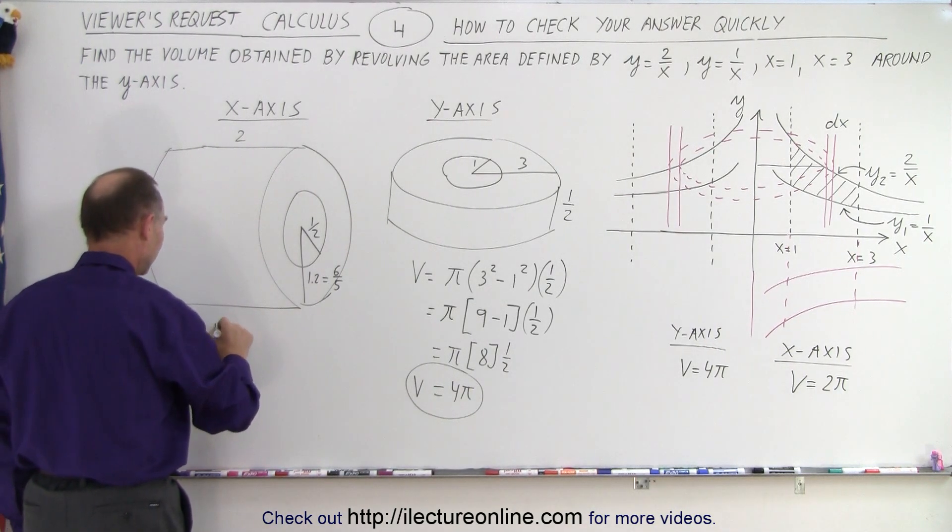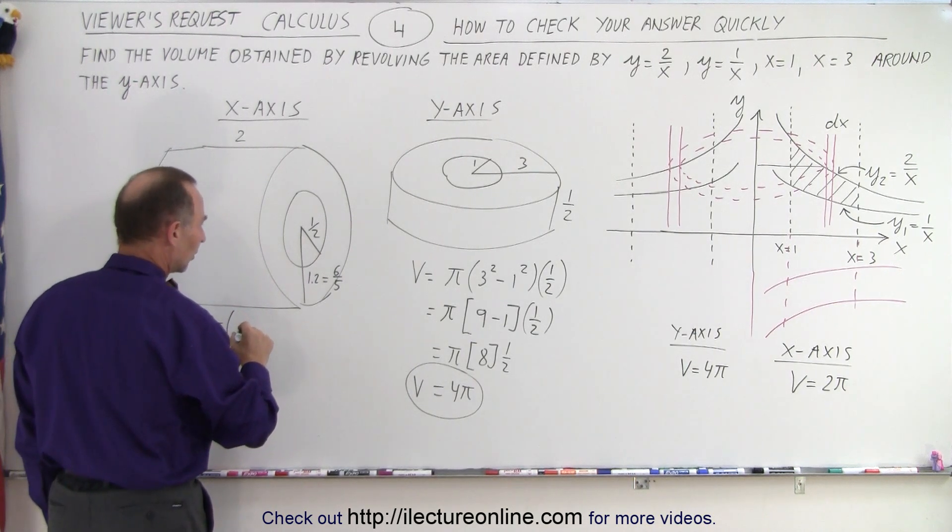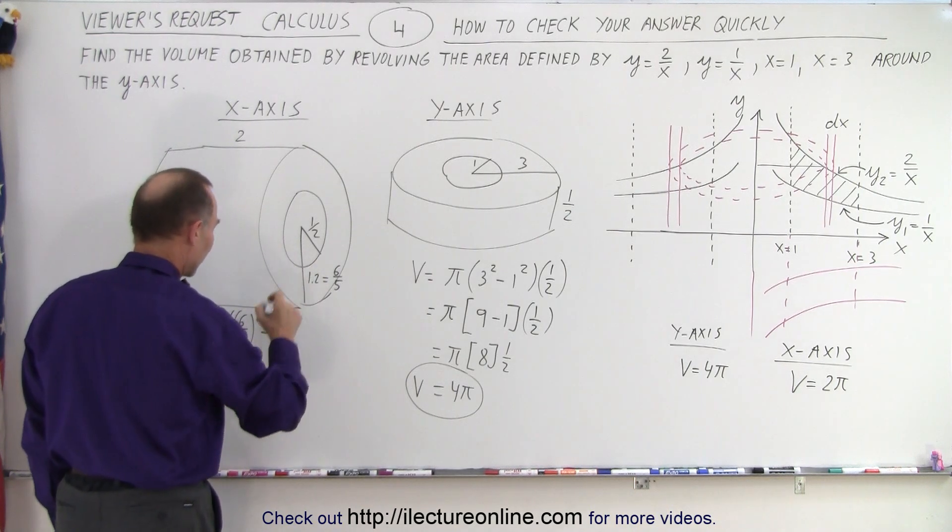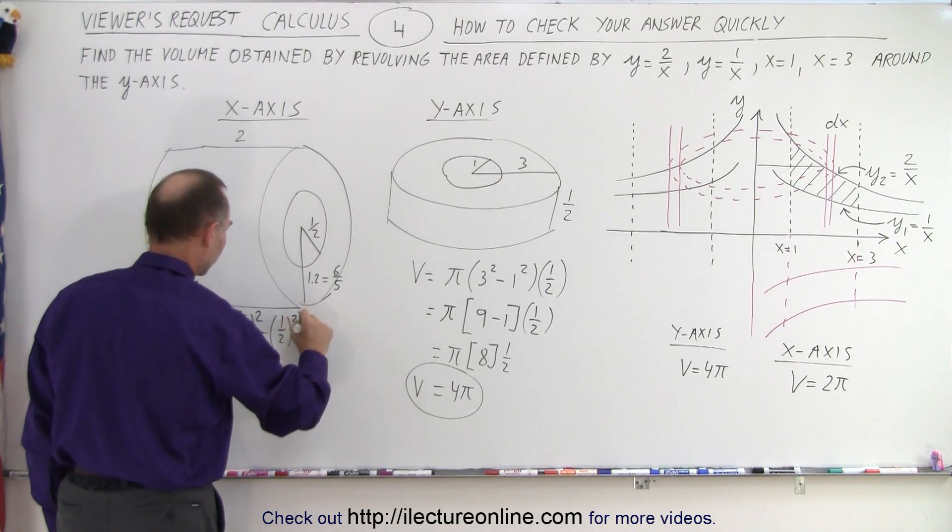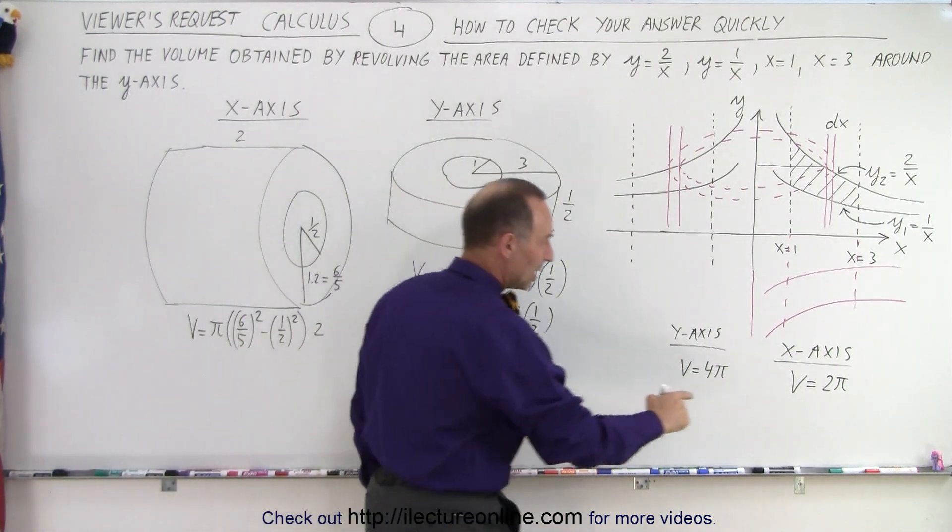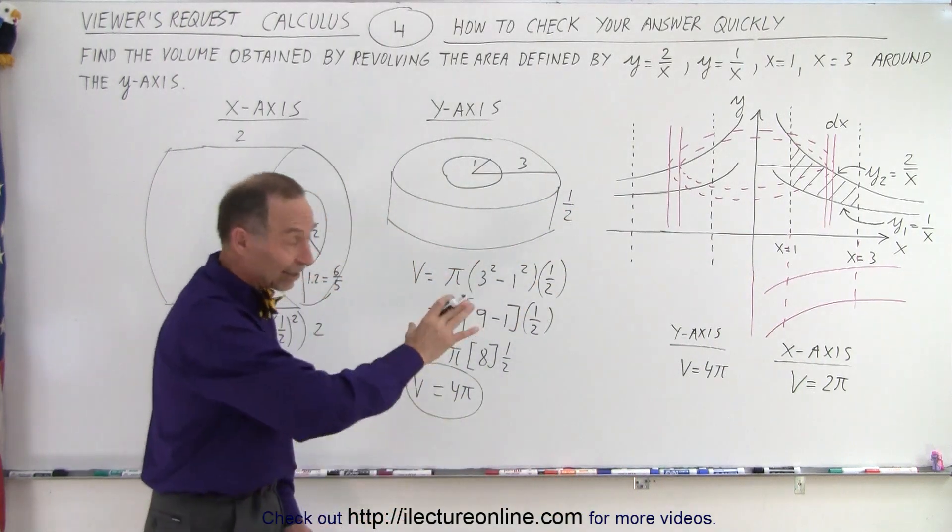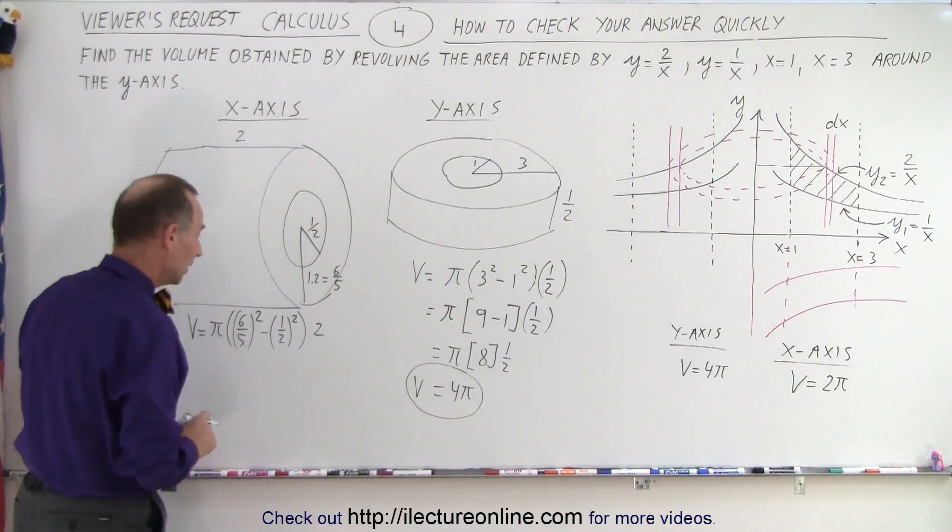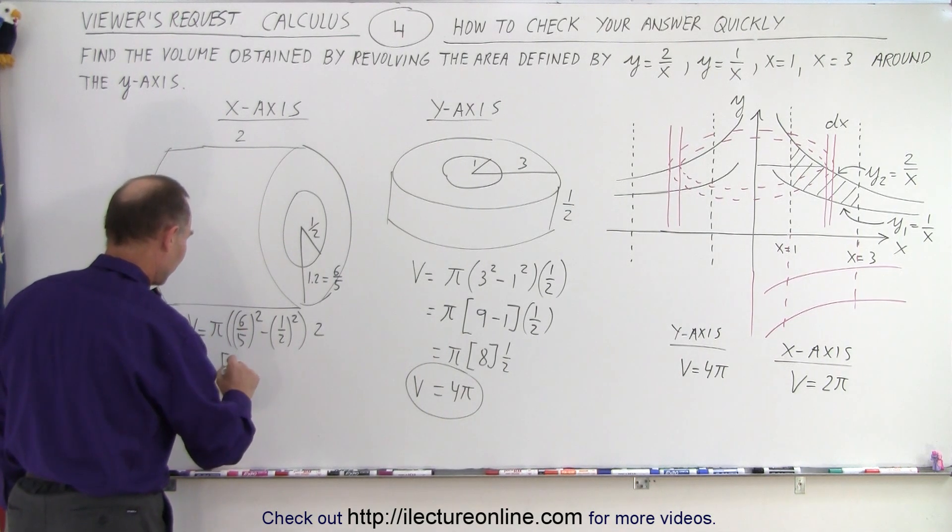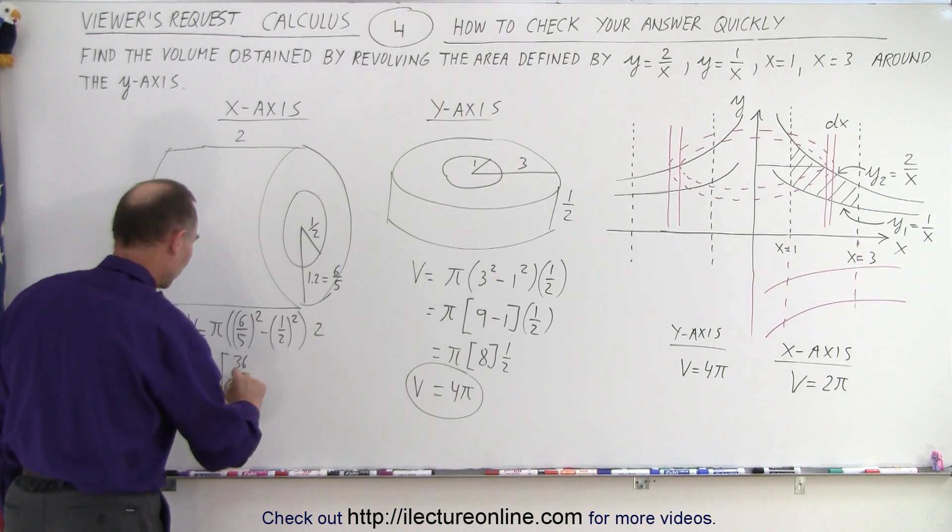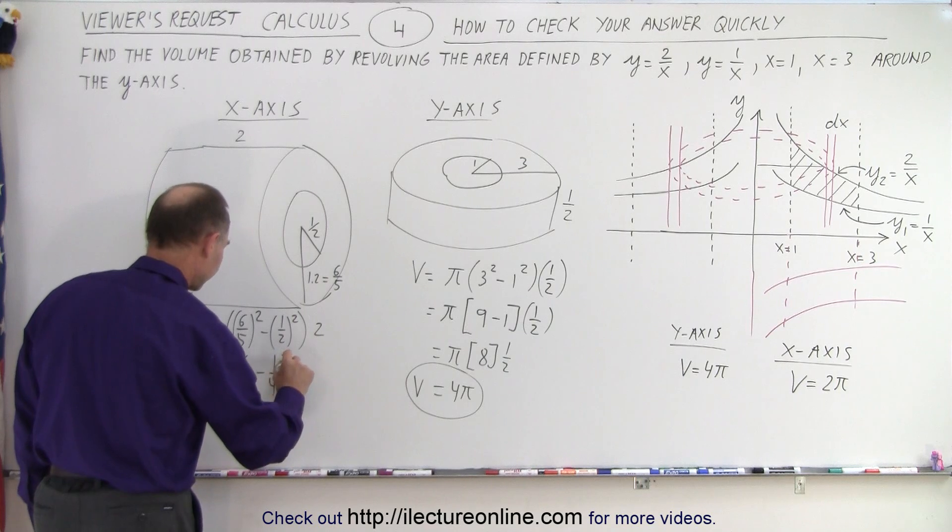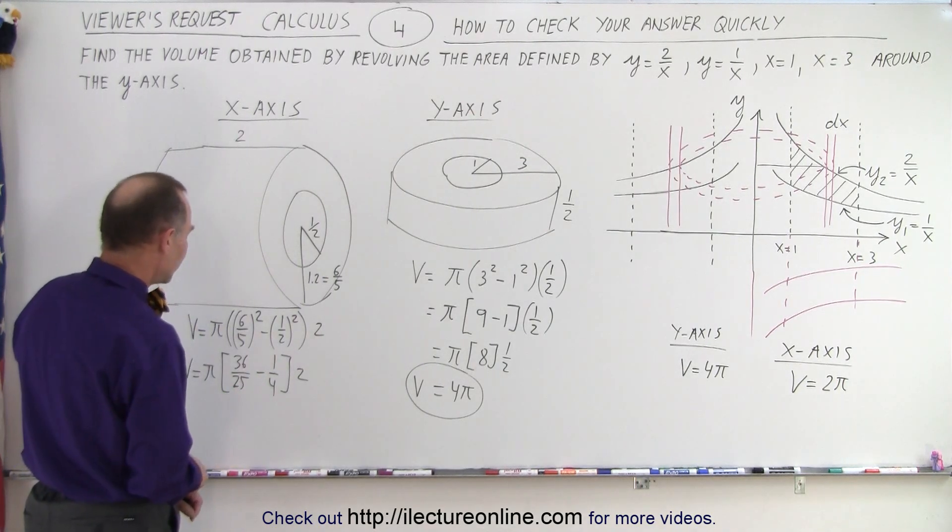Well, the volume is equal to π times the outer radius, which is 6/5 squared, minus the inner radius, which is 1/2 squared. And we have to multiply the whole thing by the length, which is 2. And again, what we're trying to find is the volume which we said was about 2π—well, exactly 2π when we used the integration. So volume is equal to π times 6/5 squared, that would be 36/25, minus 1/2 squared would be 1/4, times 2. All right.